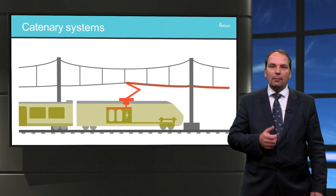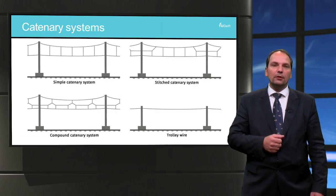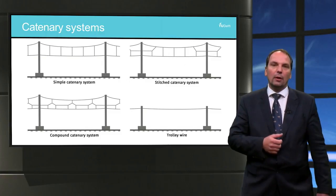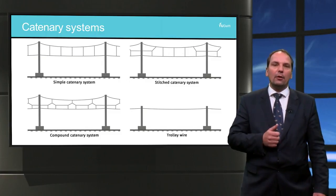To provide a stable energy supply, the contact force between catenary and pantograph must be constant and steady. This is hindered by stiffness variations in the catenary system, for example at bridges and tunnels, supports, but also to a lesser extent when passing supports.